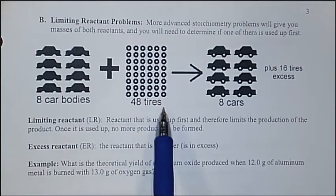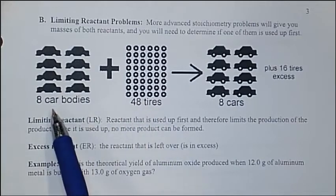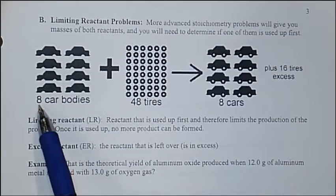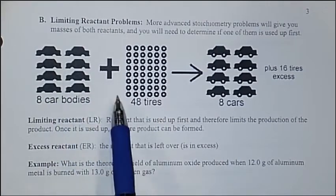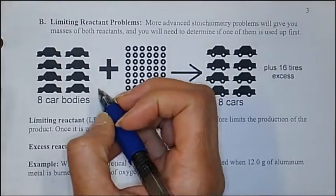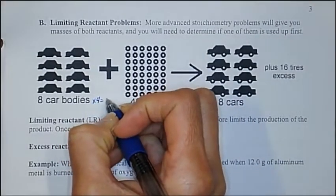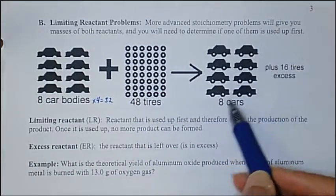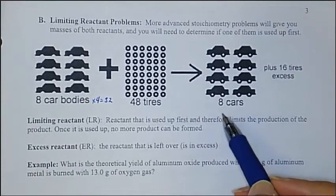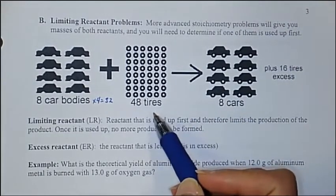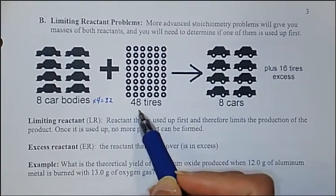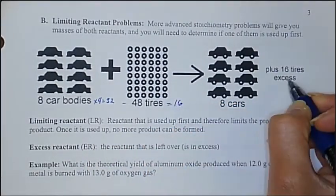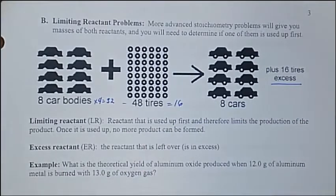I've got 48 tires here. So how many tires do I really need? If each car needs 4 tires, then 8 times 4 would give me 32 tires. But I've got 48, so that means I can definitely make my 8 cars out of the 48 tires.